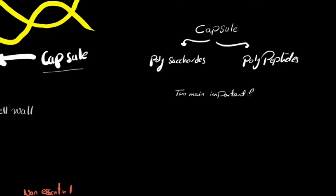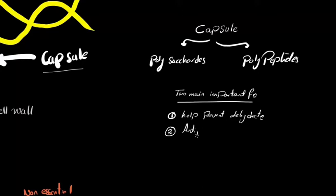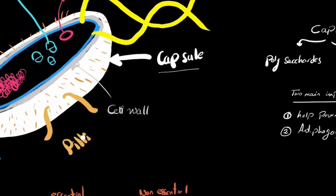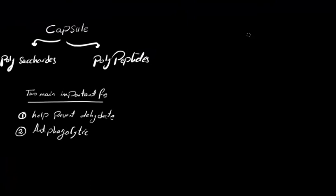A bacterial capsule may be made of polysaccharides — most capsules are made of polysaccharides — and sometimes they are made of polypeptides. When I say saccharide, think of sugars; when I say peptides, think of amino acids. The capsule has two main important functions: first, most capsules are hydrophilic — they like water — so they help prevent dehydration. Second, the capsule is anti-phagocytic; it prevents the bacteria from being engulfed by white blood cells.